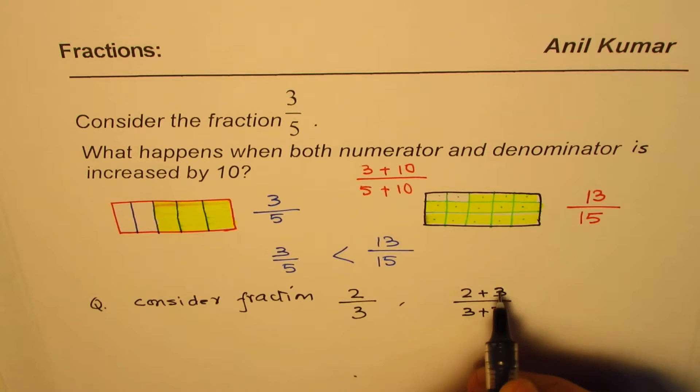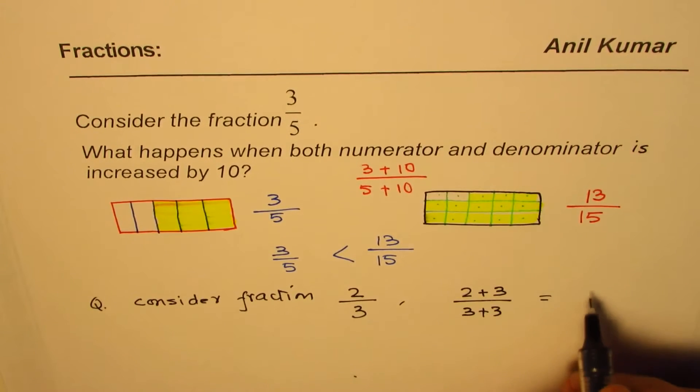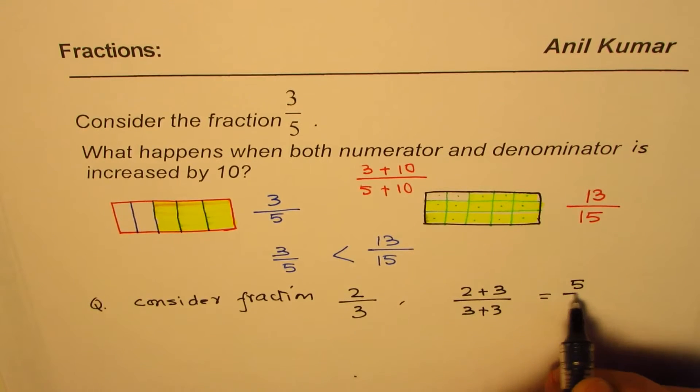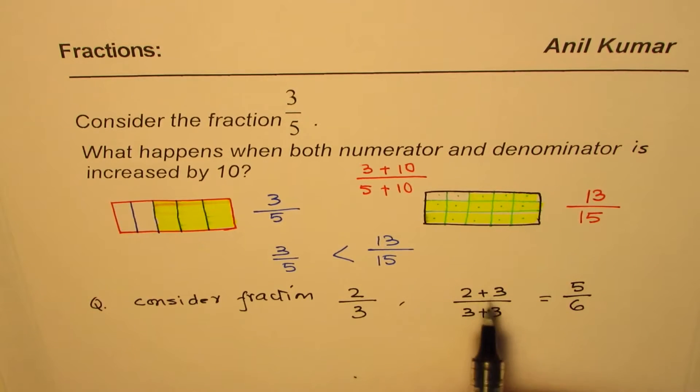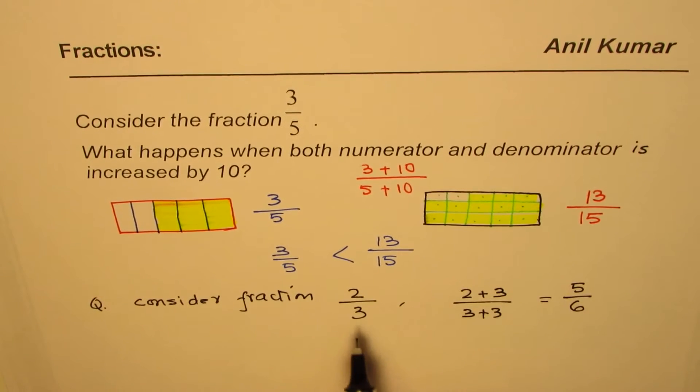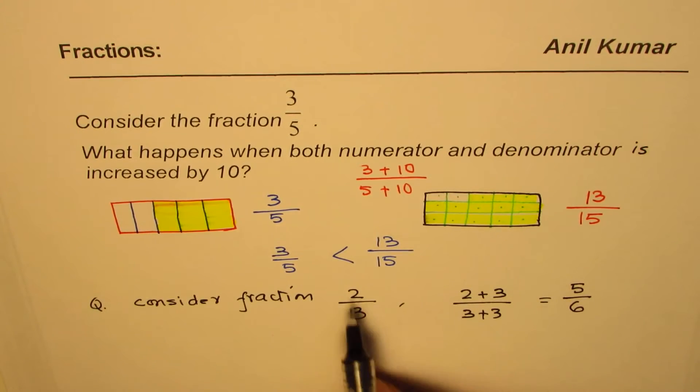So what we did was we added the same number. So what you get here is 5 over 6 kind of thing. So we are adding kind of numerators separately, denominators separately. We are not adding fractions, so don't get confused with that. Now, what you need to figure out, which one is bigger?